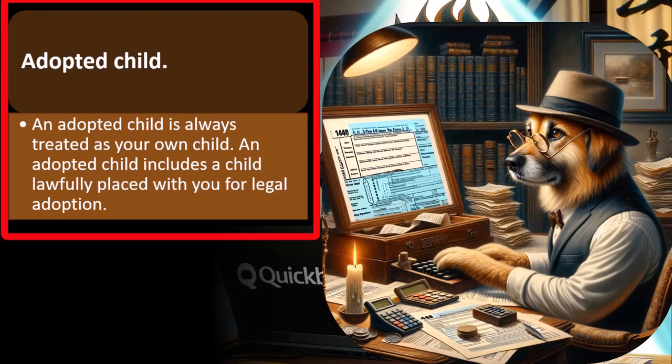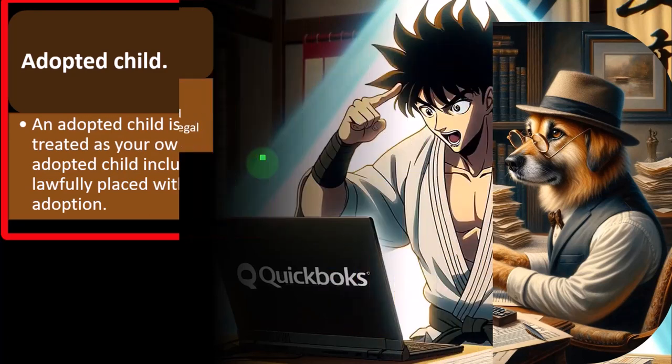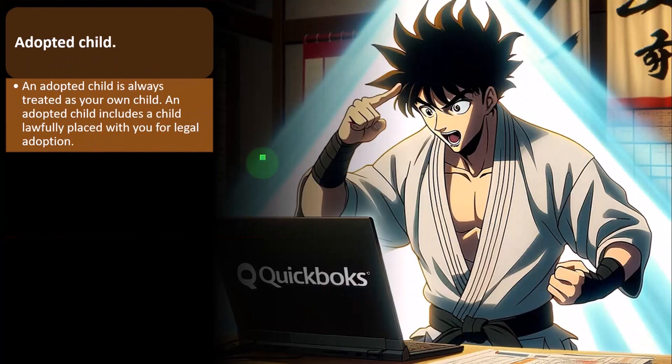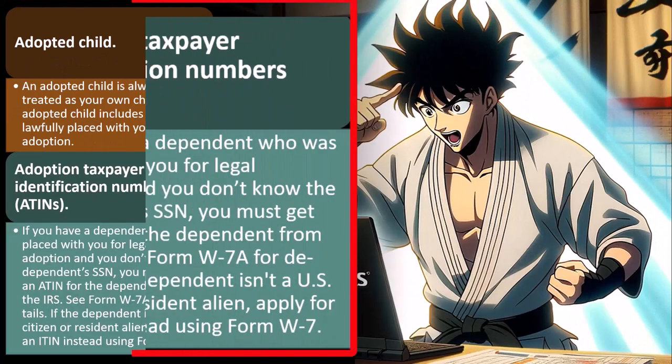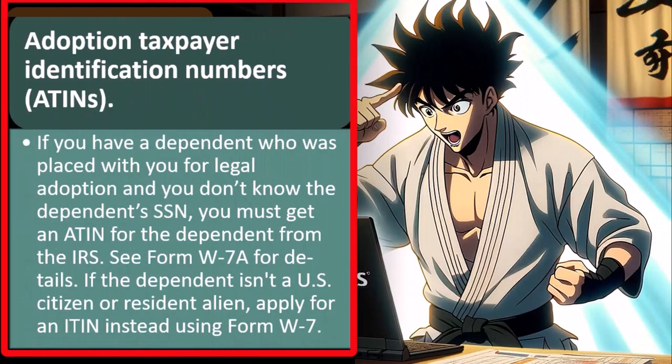So an adopted child, as we saw before with the filing statuses, an adopted child is always treated as your own child. An adopted child includes a child lawfully placed with you for legal adoption. There's also an adoption taxpayer identification number, otherwise known as the ATIN.